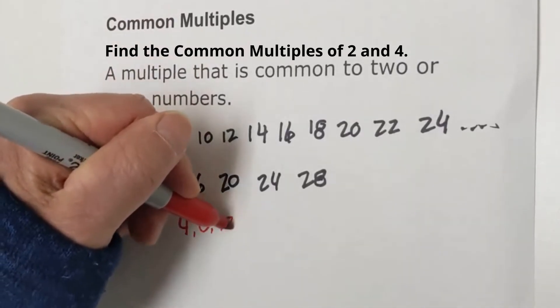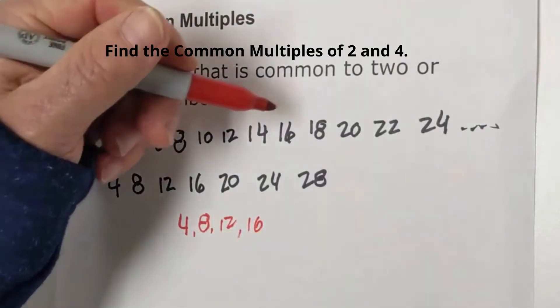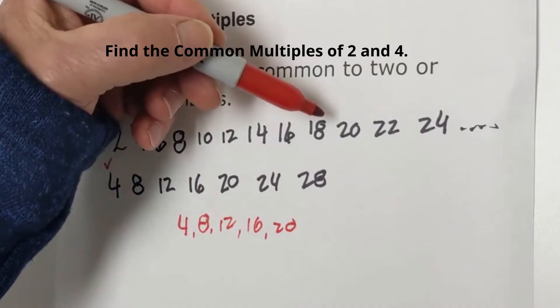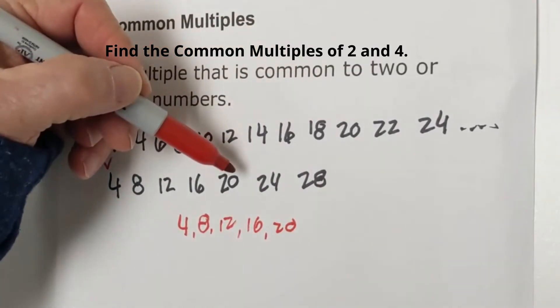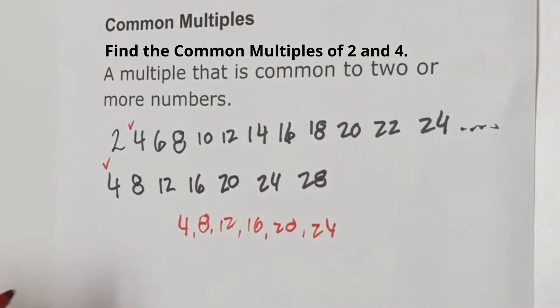No 14, but we have 16. No 18, but we have 20. No 22, but we have a 24. So those would be your common multiples.